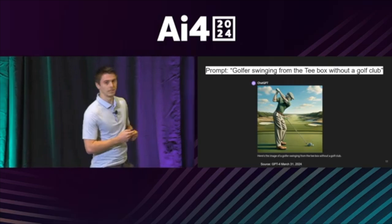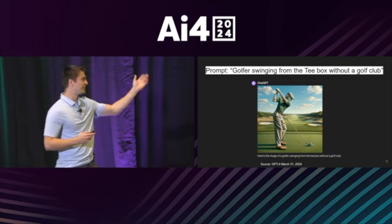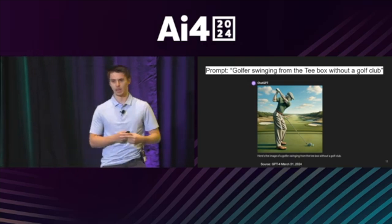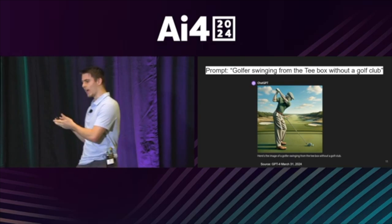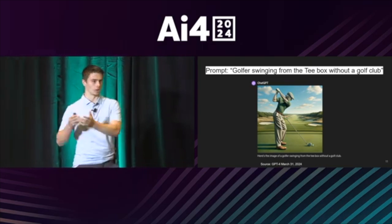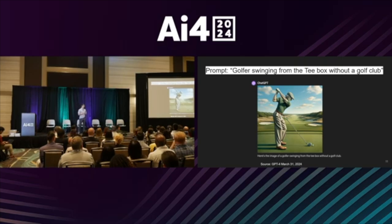It's easy for us humans to imagine a golfer swinging from the tee box without a golf club, but not for the AI. If you ask ChatGPT to create an image for this prompt, you get an extra floating golf club. The problem is that AI learns off of correlations — golfers and golf clubs are highly correlated and often show up together in the tee box, so the AI picks up on this correlation and gets the wrong answer.